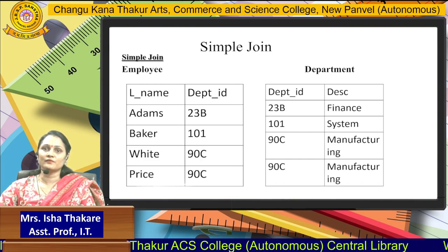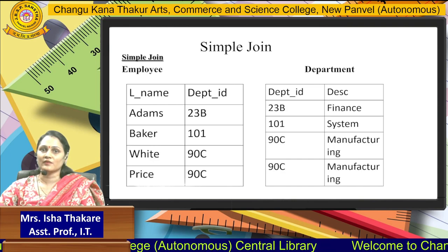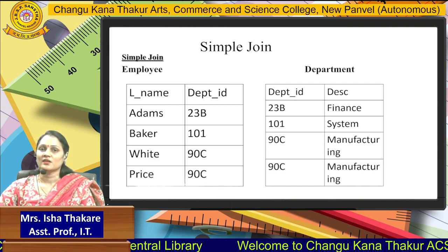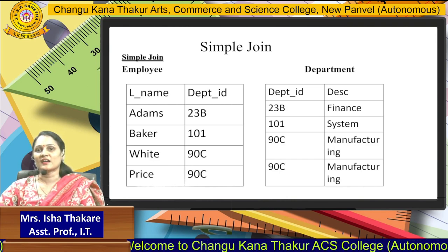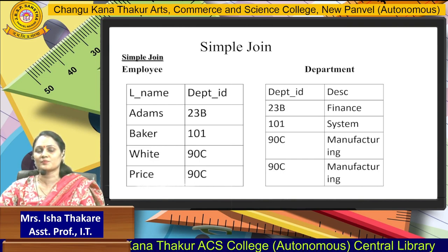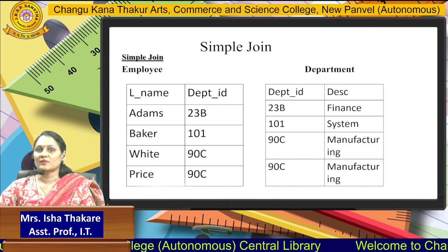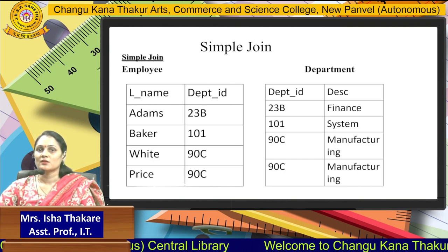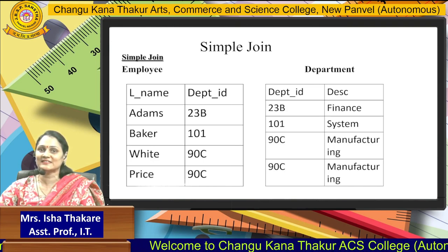Let's see an example for the simple join. Here we have two tables: the employee table and the department table. The employee table has the fields LName and DepartmentID, and the department table has DepartmentID and DESC (the descriptive field). DEPT_ID is common in both tables, so it is possible to join them using this common field.